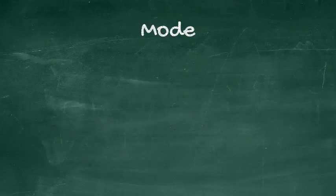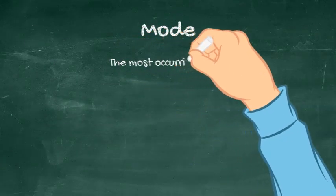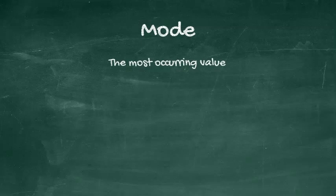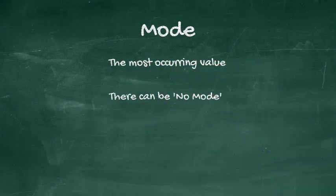Mode. Mode refers to the most occurring number or value in a set of values. Note that it is possible not to have a most occurring number, and then the answer becomes no mode.